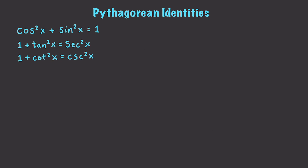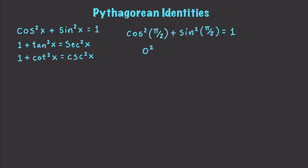This is going to be another way for us to dramatically simplify very complicated things. Let's say we have a formula that's cosine squared of π/2 plus sine squared of π/2, and this is equal to 1. We're just going to verify that this is actually true. What is π/2? It is 90 degrees. If we plug this into a calculator, this comes out to 0 squared, which is 0, and 1 squared, which is 1, giving us 1. So indeed true.